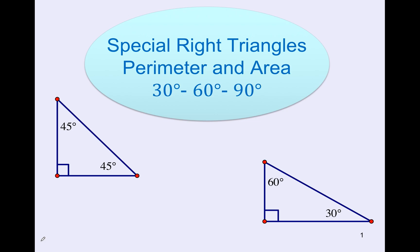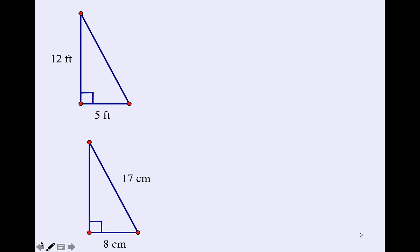Today we're going to do a lesson on special right triangles — perimeter and area — and we're going to focus on 30-60-90 right triangles. Before we do that, we're going to talk about perimeter and area of a triangle in general.